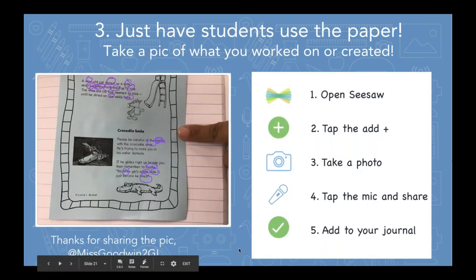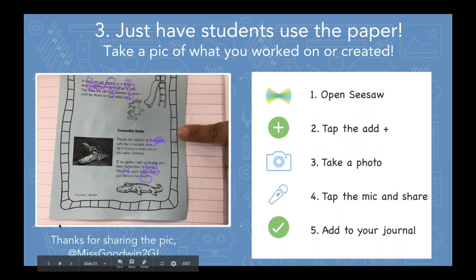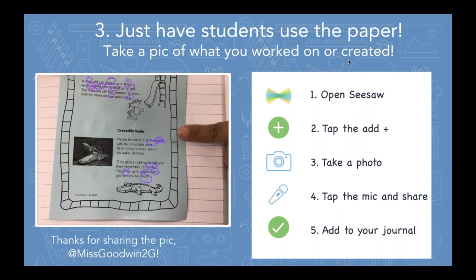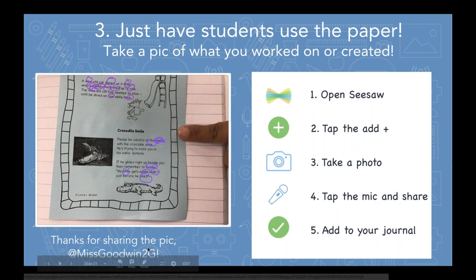That brings me to idea number three: not everything your students are marking, drawing on, or labeling has to be done on the whiteboard in Seesaw. You could just have them do it on paper and then take a picture of whatever they were working on or creating. Some things you can just have students do on paper, then take a minute to photograph it and either read it aloud or explain what they were doing. Whether it's a project with construction paper or artwork, if they drew it on other materials, just have them photograph it, add it to Seesaw, and use that microphone at the end.